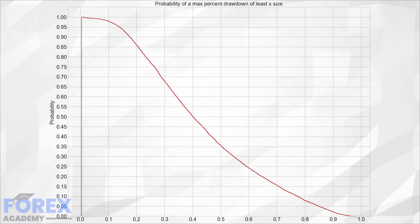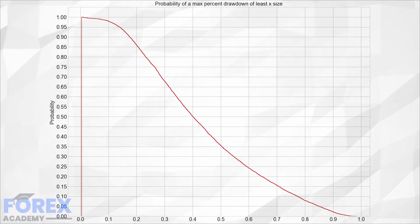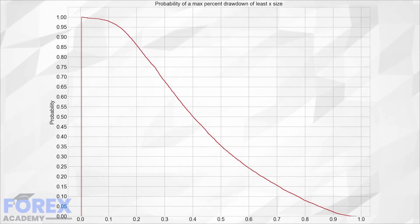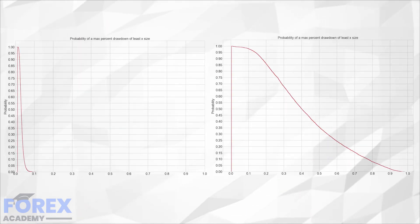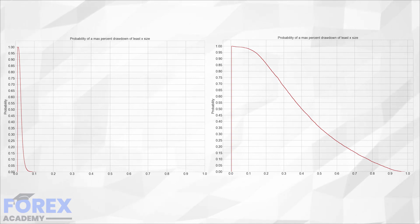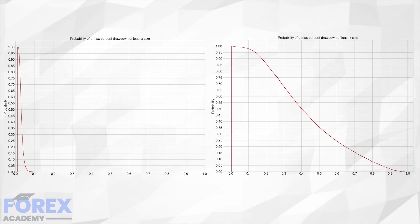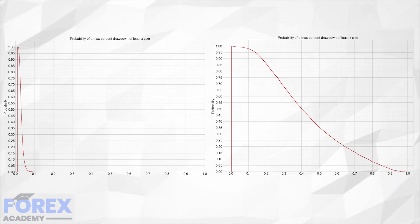We can see that even using a constant trading size, the drawdown grows with the position size. Of course, we can observe that the returns also grow. Furthermore, profits grow at a much higher rate than risk. Moving from one micro lot to one lot, one-year returns went from $1,158 to $115,840 — a 100 times increment. Despite this, the drawdown moved from 2% to 40%, a 20 times increase.